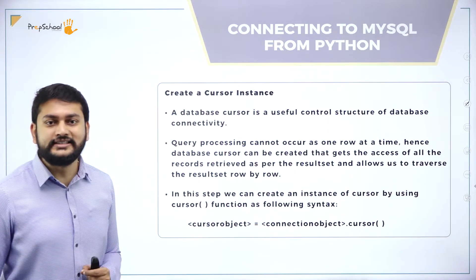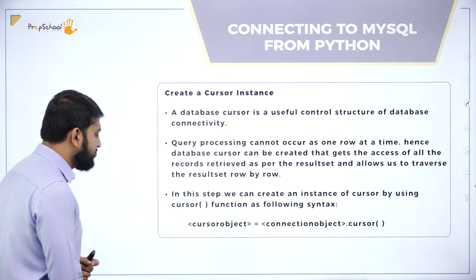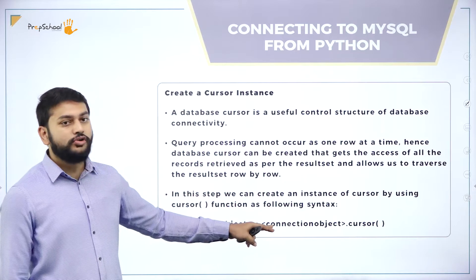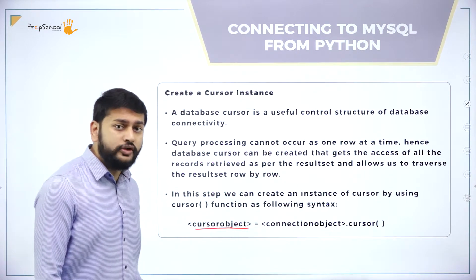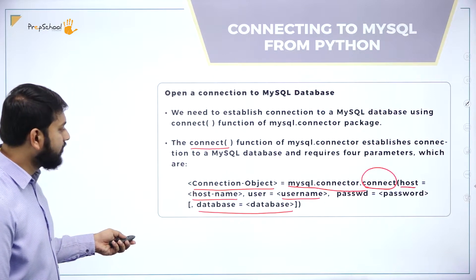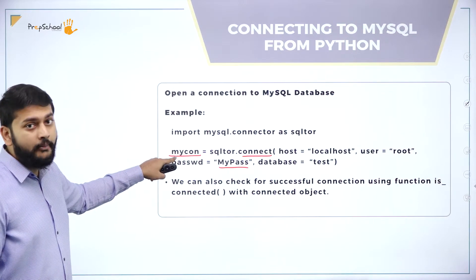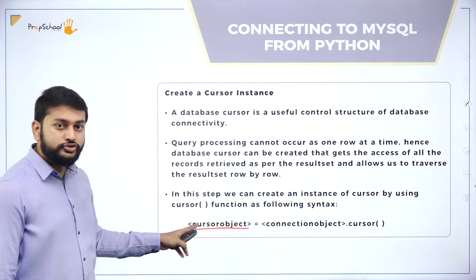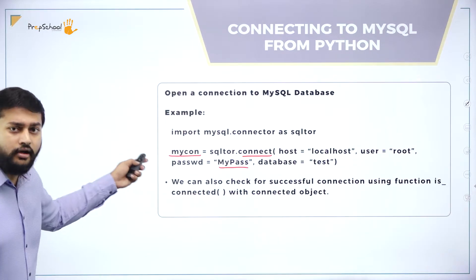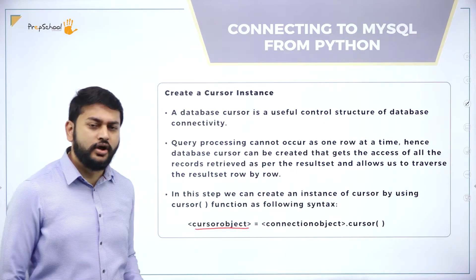Moving on to creating the cursor instance — this is a very important point. The syntax to create the cursor instance is: cursor_object = connection_object.cursor(). What is the connection object? Let me recollect — mycon is the connection object. So: my_cursor = mycon.cursor(). mycon is the connection object, so cursor object equals mycon.cursor().